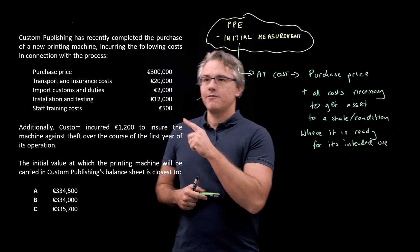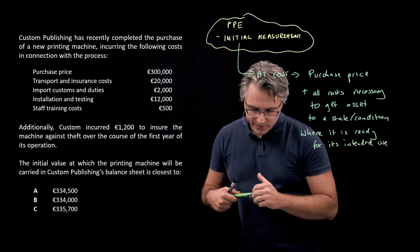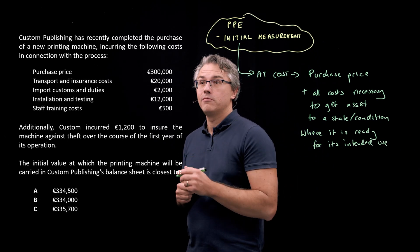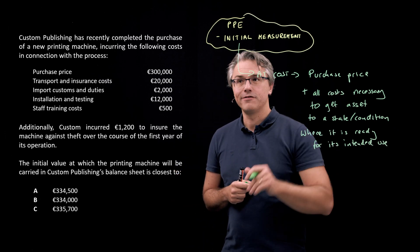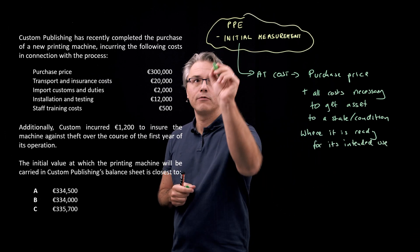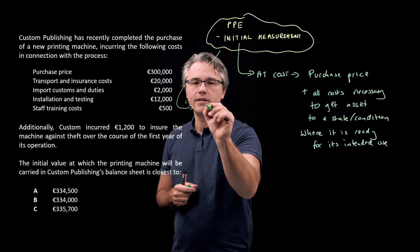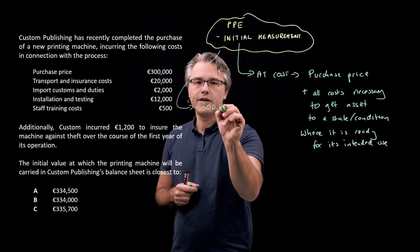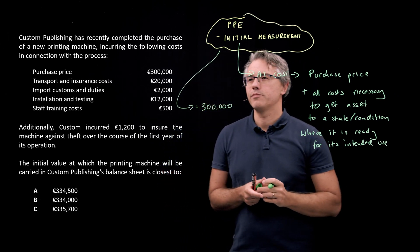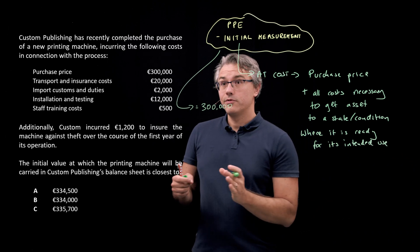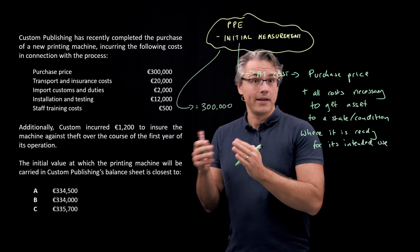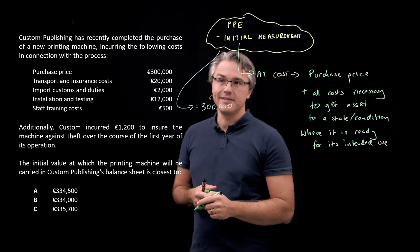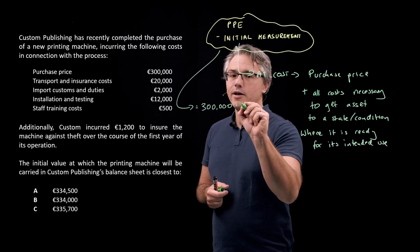So let's think about which of these costs should be included in the initial measurement of the machine. The purchase price, for sure. That's the first item over here. So I'm going to say, initial measurement indeed will include the $300,000 of purchase price. Now, transport is absolutely necessary to get the machine to the place, the state and condition where it's ready for its intended use. So this as well.